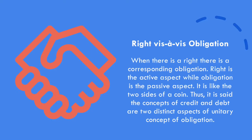In our study of obligation, there is a need to correlate right and obligation. When there is a right, there is a corresponding obligation. Right is the active aspect, while obligation is the passive aspect — it is like the two sides of a coin. Thus, it is said the concepts of credit and debt are two distinct aspects of the unitary concept of obligation.